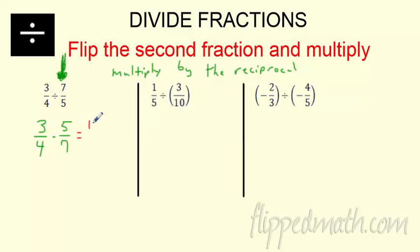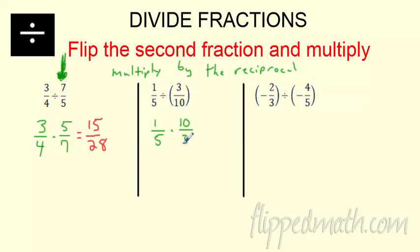Let's multiply it out. Three times five is 15, four times seven is 28. That doesn't reduce, so boom, done. Now, one fifth divided by three tenths: flip the second fraction. The first one stays the same, but three over ten becomes ten over three. Flip it upside down and multiply. One times ten is 10, three times five is 15. This one reduces — five divides both: five goes into 10 twice, five goes into 15 three times. Reduce to simplest terms: two thirds.